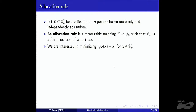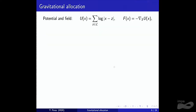What we want is not just an allocation for a specific set of points but an allocation rule — a map from every collection of points to an allocation — and we'd like the distance between x and the star it's allocated to to be small on average.